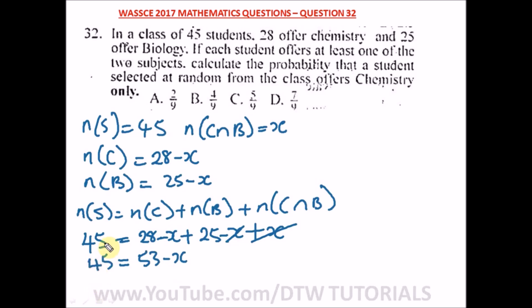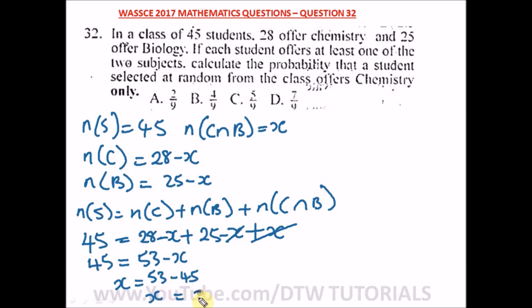So we have 45 equals 53 minus x. Taking x to the left side and 45 to the right side gives us x equals 53 minus 45, so x equals 8.